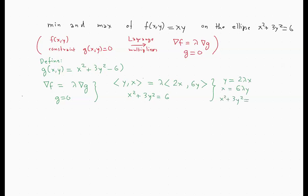How do we solve this? The simplest way is to note that none of x, y, and lambda can be equal to 0. If x were 0, then from the first equation you would get y = 0. But that's impossible because of the constraint: 0² + 3·0² cannot equal 6.